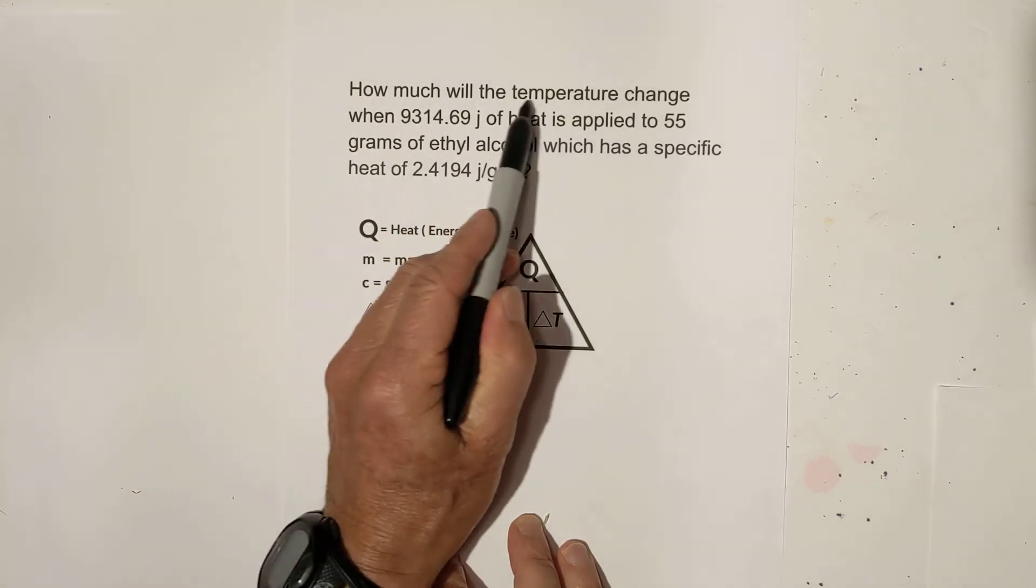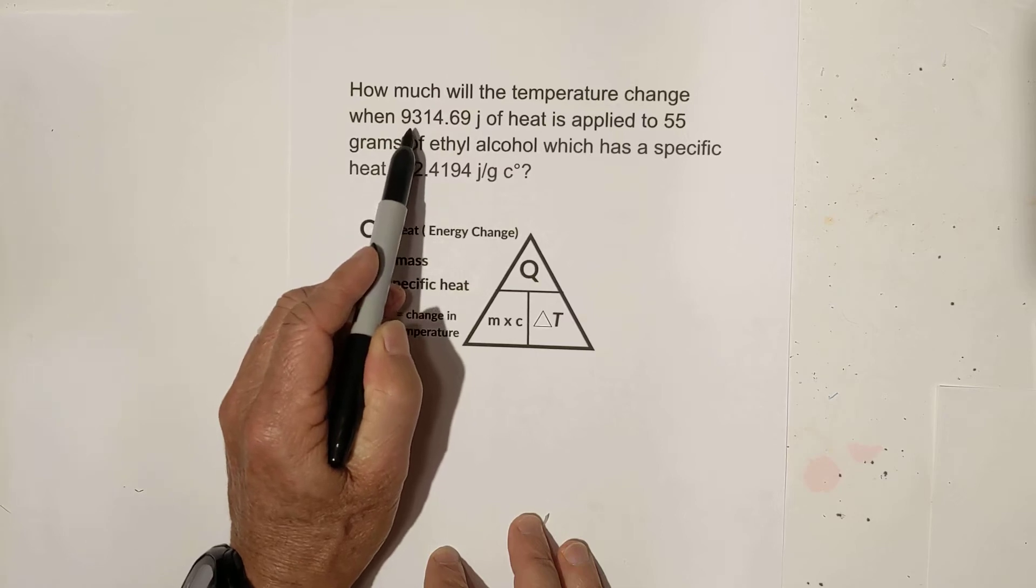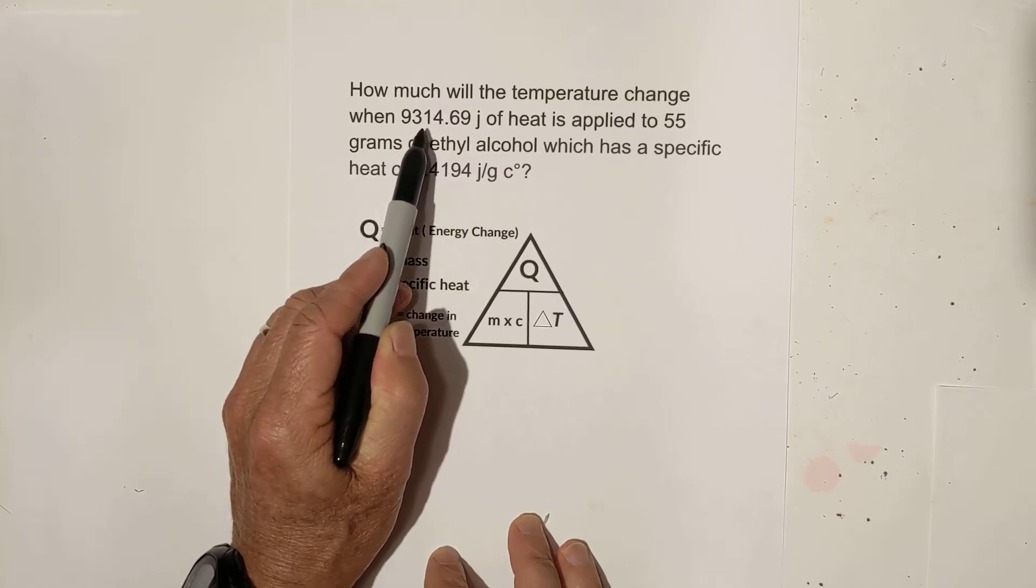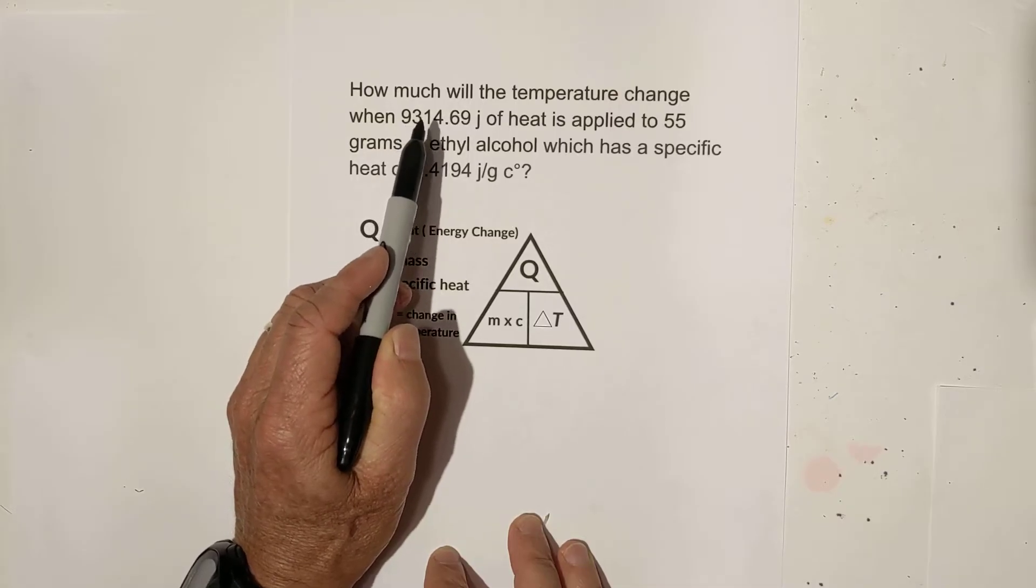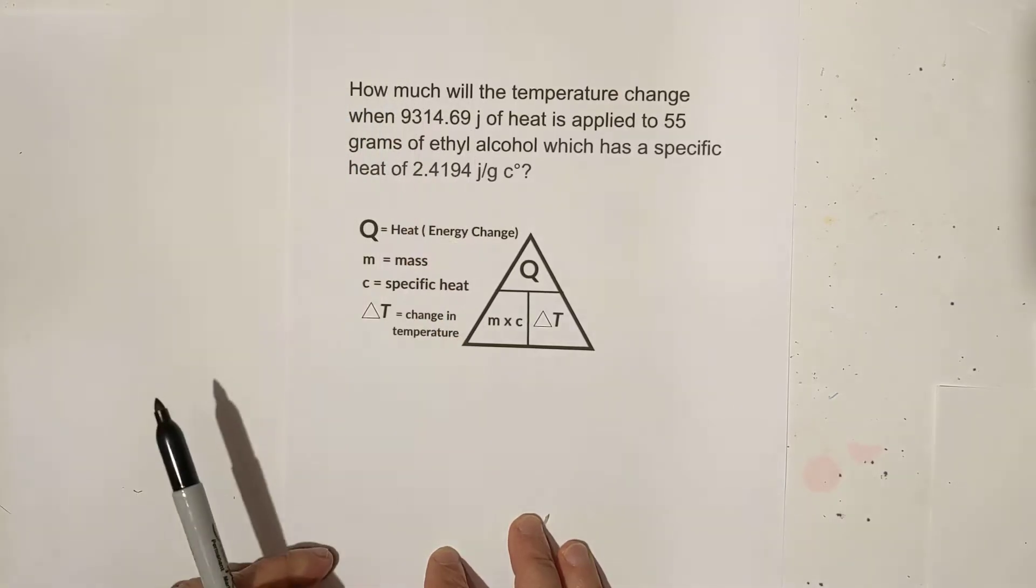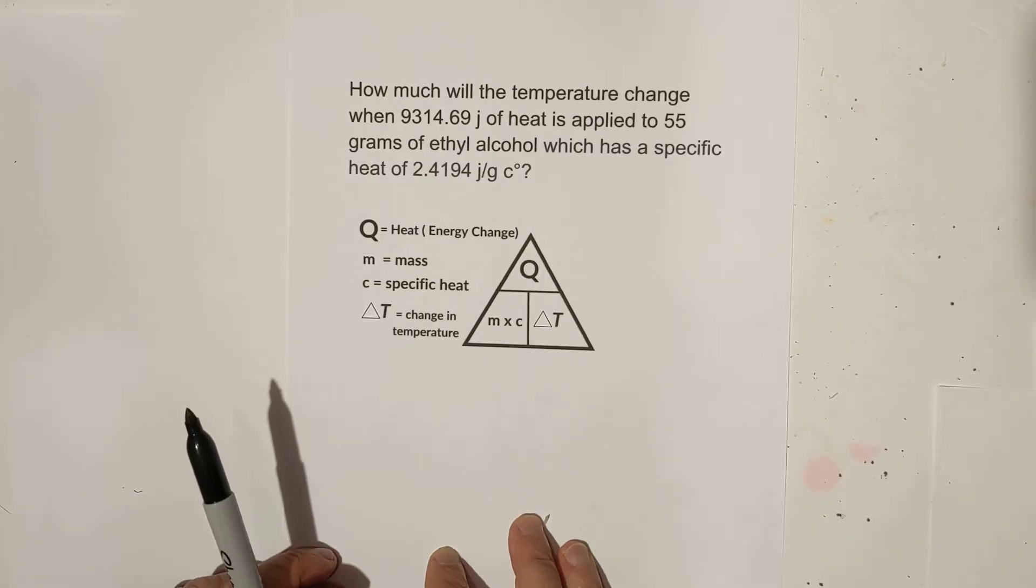It says how much would the temperature change when 9,314.69 joules of heat is applied to 55 grams of ethyl alcohol which has a specific heat of 2.4194 joules per gram Celsius? So let's just see what we have.